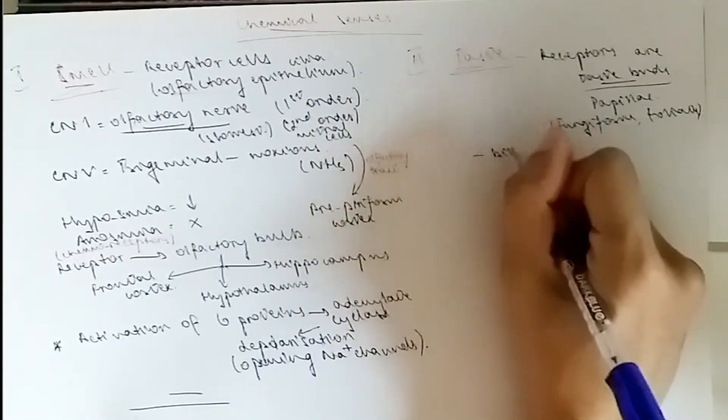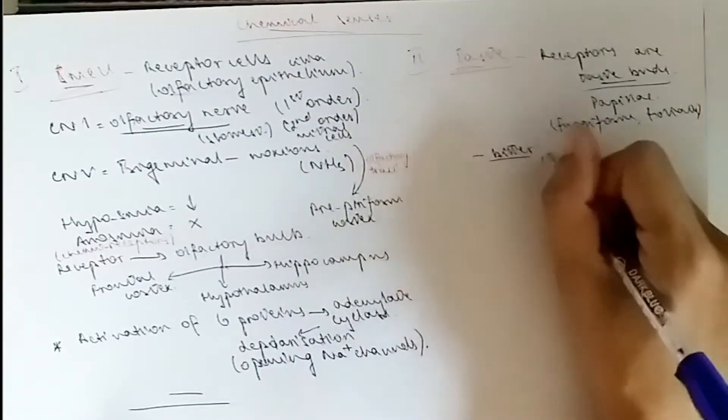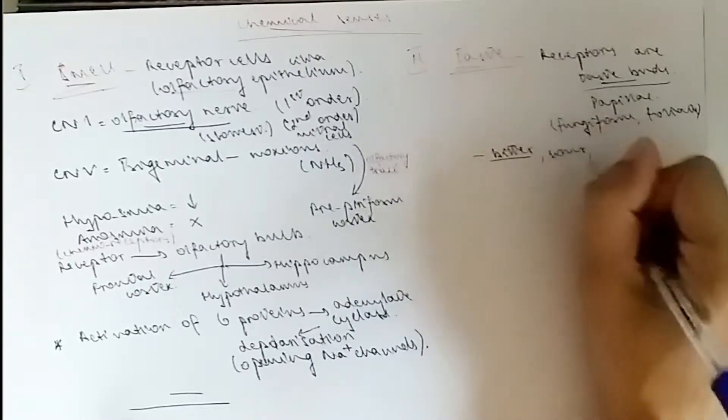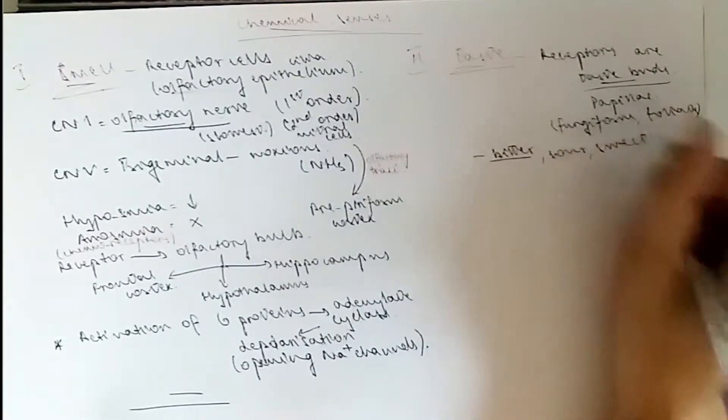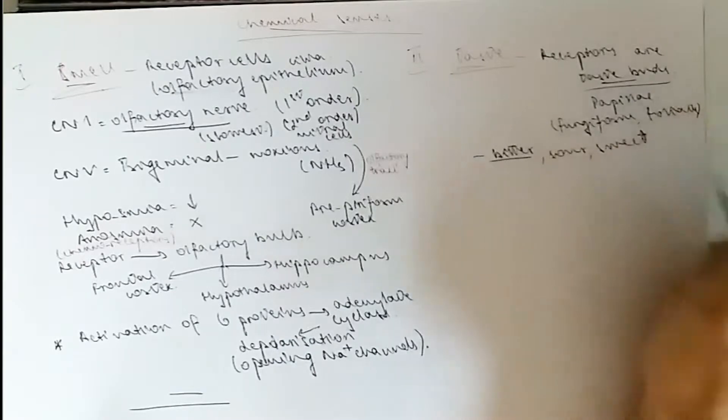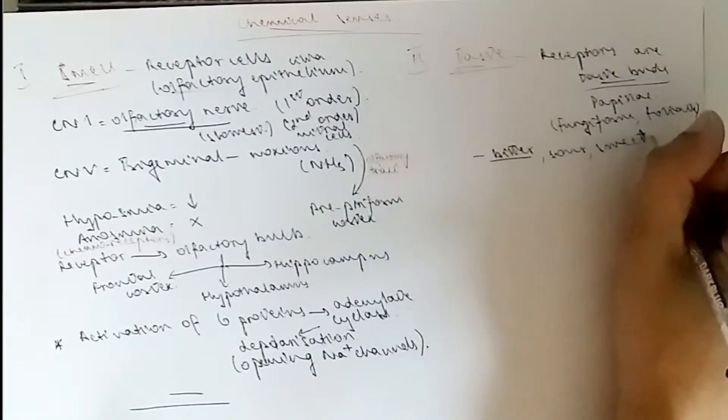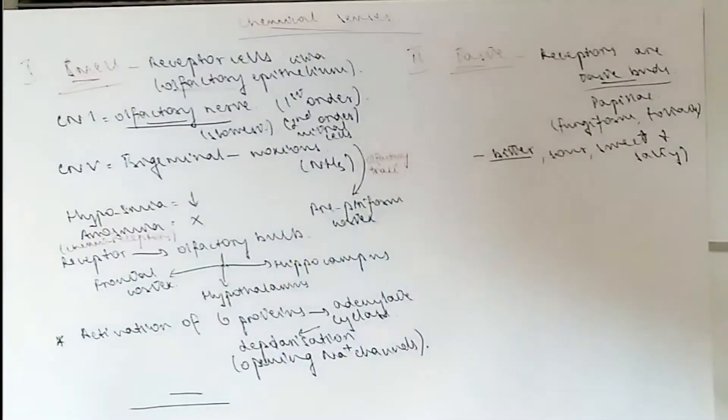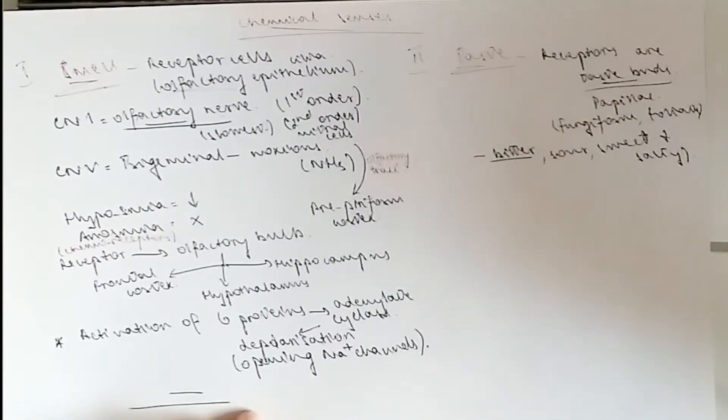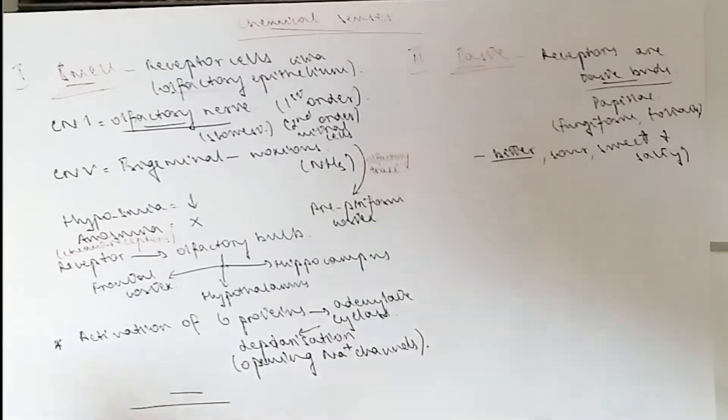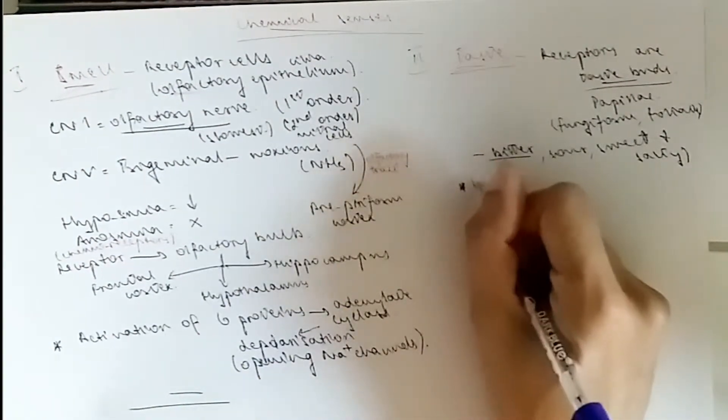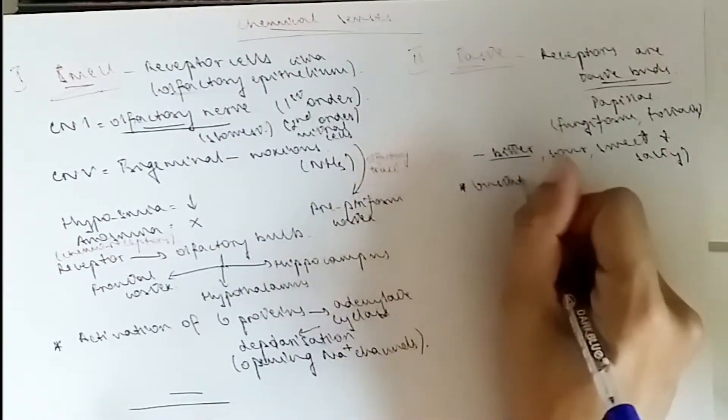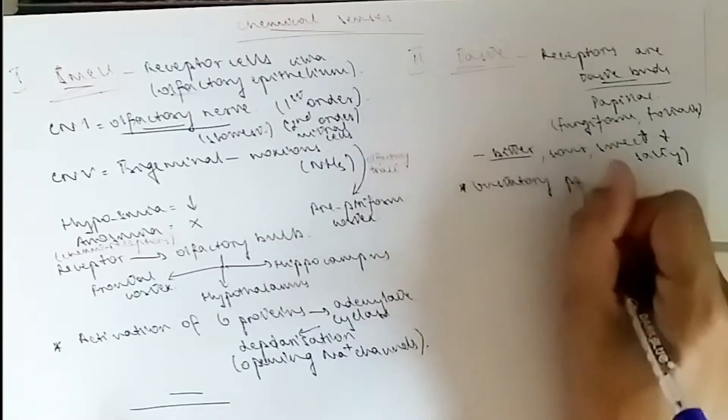So the tastes are bitter, which has the most sensitivity, then you go to sour, then sweet, and then salty. Sweet and salty are in the anterior parts, mostly by the fungiform papillae, and bitter and sour in the posterior. This is known as the gustatory pathway.